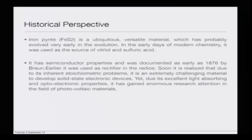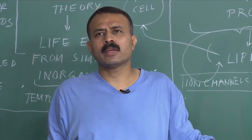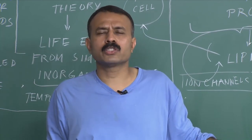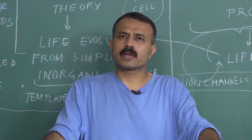In the early days of modern chemistry it was used as a source of vitriol and sulfuric acid — it was used to manufacture sulfuric acid and vitriol. What is very interesting to know is that it has very amazing semiconductor properties and it is one of the very potential materials for photovoltaics.